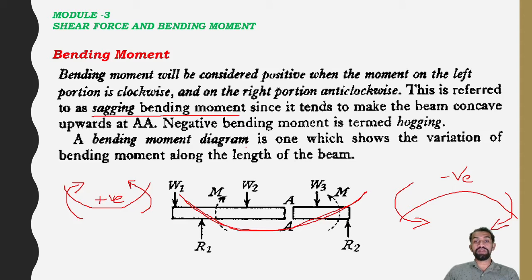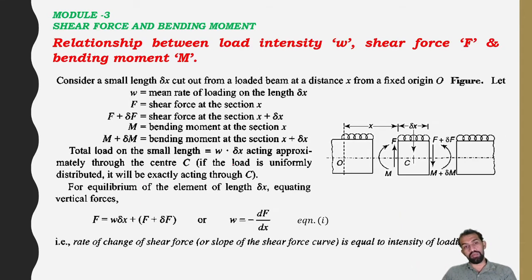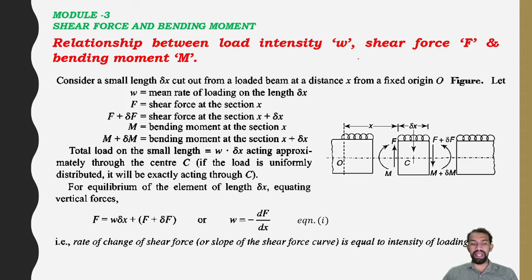The bending moment diagram shows the variation of bending moment along the length of the beam. Now let us look at the relation between load intensity W, shear force F, and bending moment M.